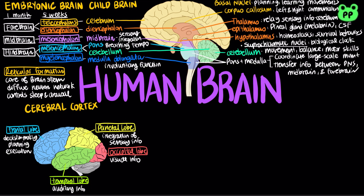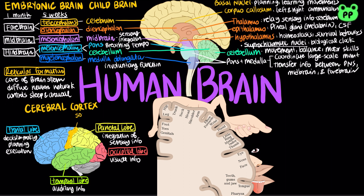When a somatosensory receptor is triggered by touch, pain, pressure, or the position of muscles and limbs, it sends information up the spine to the midbrain, which integrates the sensory information, then to the thalamus, which relays sensory information to the cerebrum, in an area located at the front of the parietal lobe known as the somatosensory cortex.